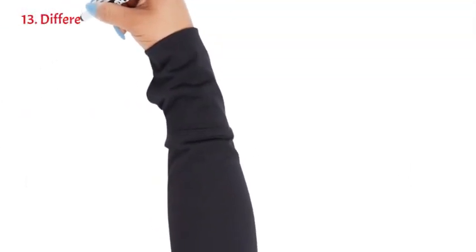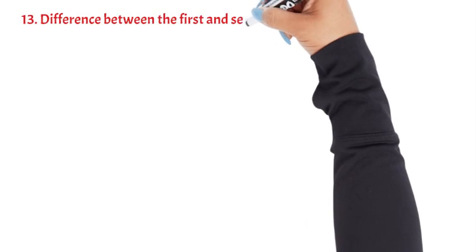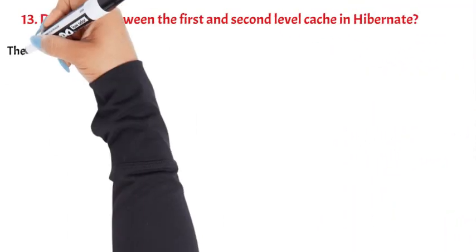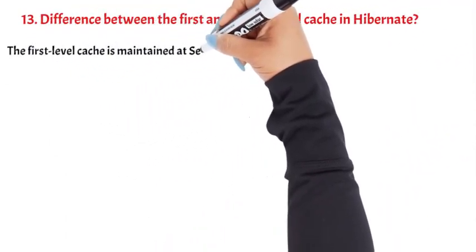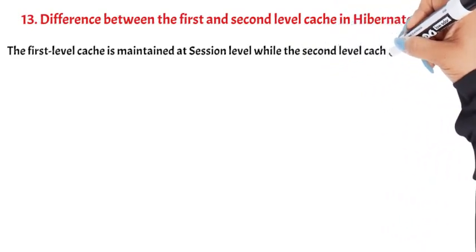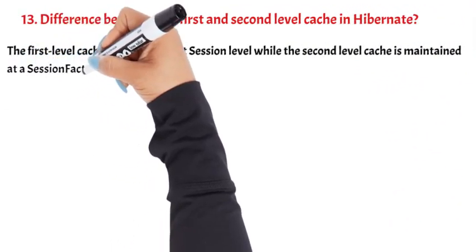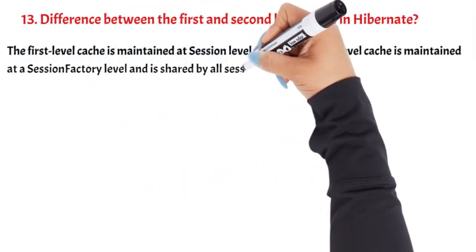Question 13: Difference between the first and second level cache in Hibernate. The first level cache is maintained at session level, while the second level cache is maintained at a session factory level and is shared by all sessions.